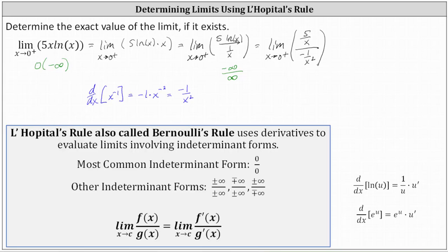Now let's check the form of this limit. As x approaches zero from the right, 5 divided by x approaches positive infinity, and negative 1 divided by x squared approaches negative infinity. We still have an indeterminate form, but applying L'Hôpital's rule again won't help. Instead, we'll simplify this quotient: instead of dividing by negative 1 divided by x squared, we multiply by the reciprocal, giving us times negative x squared divided by 1.